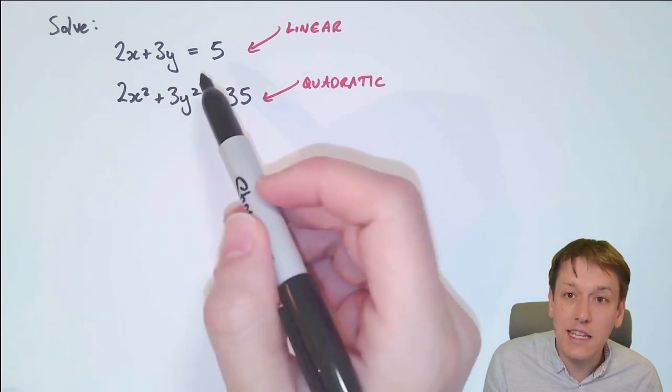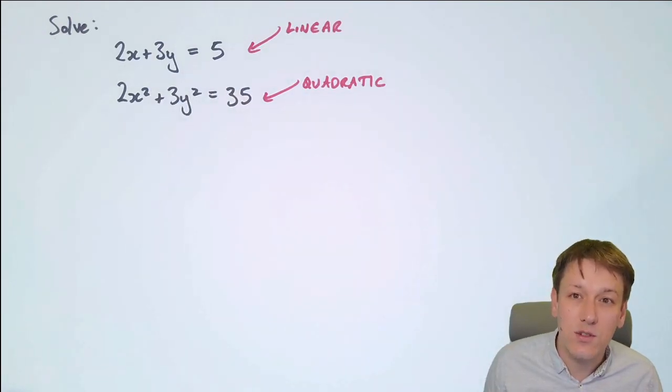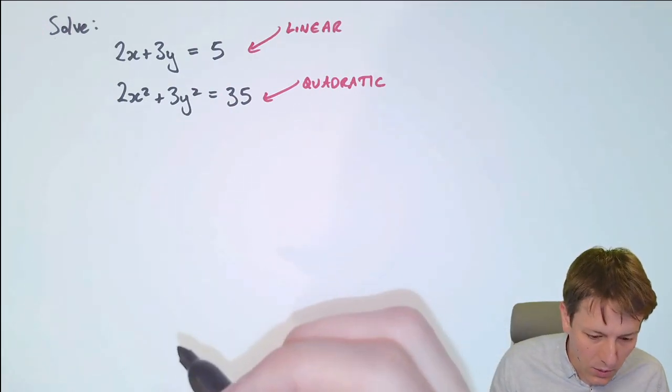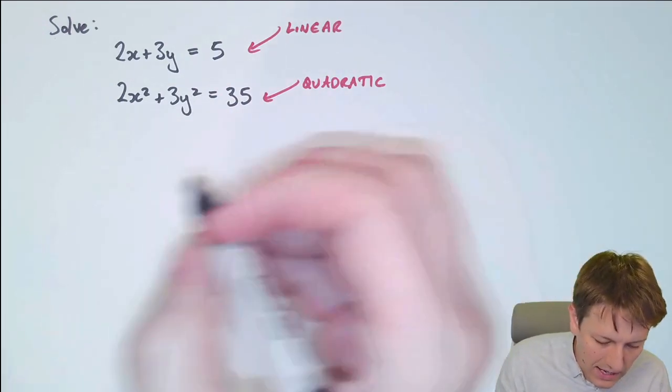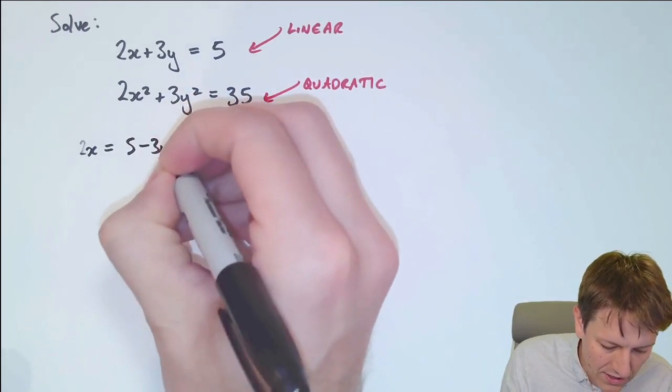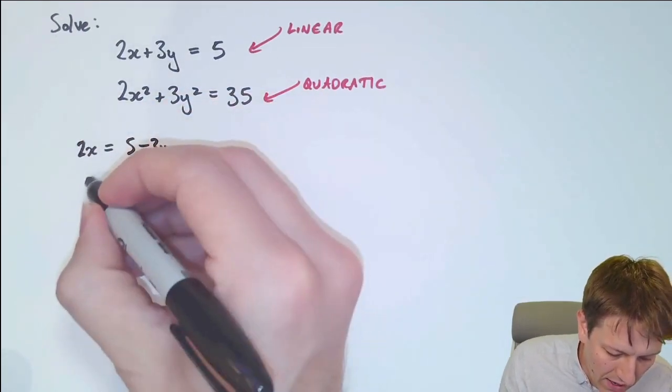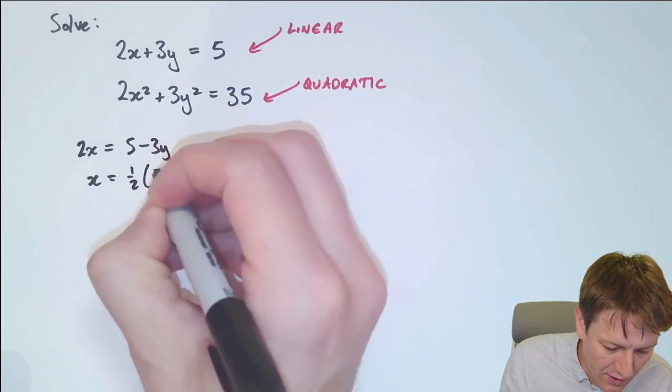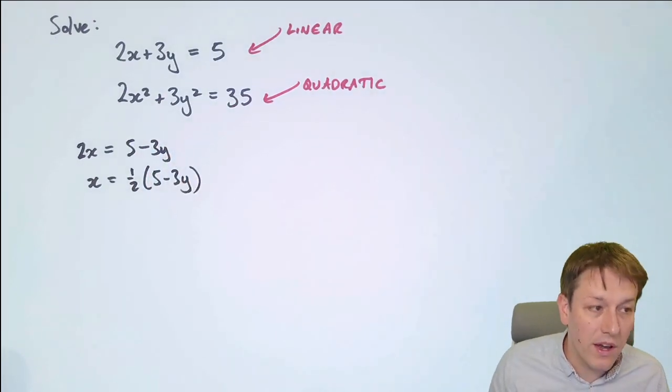First step in solving these is to take the linear equation and make either x or y the subject. You can do whichever one you think is easier. In this case I'm going to make x the subject, so I'd have 2x equals 5 minus 3y, and then x is a half of 5 minus 3y.